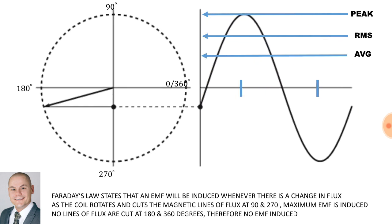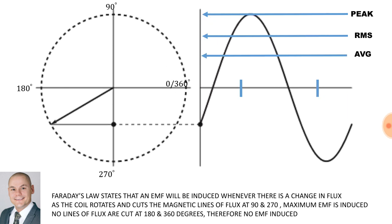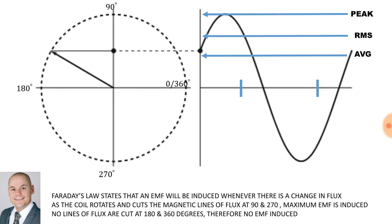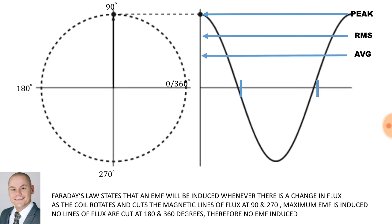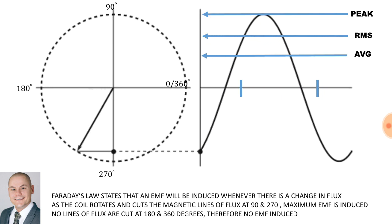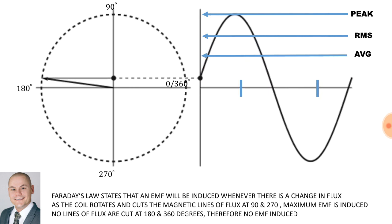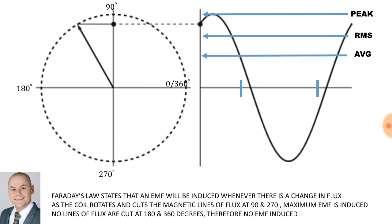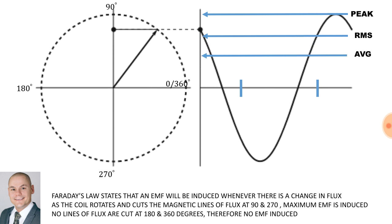Using Faraday's law to help us understand how to generate an EMF sine wave, Faraday's law states that an EMF will be induced whenever there is a change in flux. As the coil rotates and cuts the magnetic lines of flux at 90 degrees and 270 degrees, maximum EMF is induced. No lines of flux are cut at 180 degrees and 360 degrees, and therefore no EMF is induced.